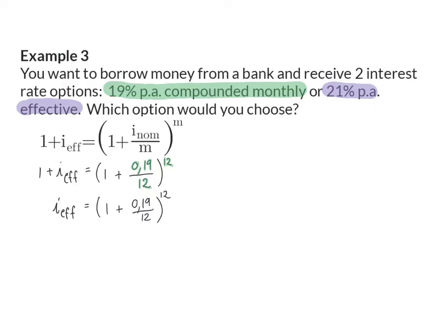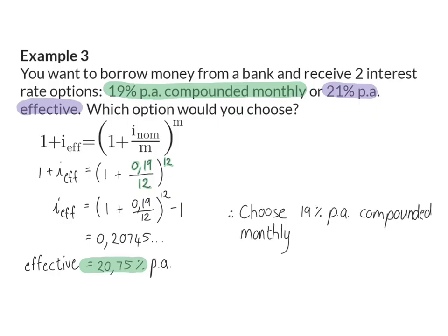To solve the effective rate, I take the bracket and subtract 1, giving a decimal of 0.20745. Multiplying by 100 gives a rounded answer of 20.75% per annum. So the 19% per annum compounded monthly is actually an effective rate of 20.75% per year. Because we are borrowing money, I want to pay the smallest possible interest rate, and therefore I would choose 19% per annum compounded monthly, since its effective rate of 20.75% is smaller than 21% per annum effective.